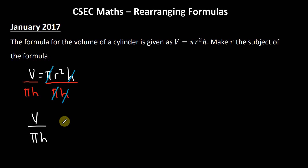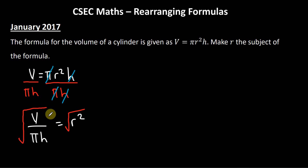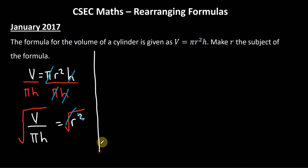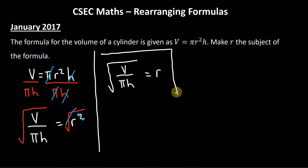We'll be left with V ÷ πh = r². We have not yet reached our goal — they want us to make r the subject, not r². So we need to do the opposite of the square operation, which is the square root. I'll square root both sides. It's key to note that the square root sign must extend over both the numerator and denominator of the fraction. The square root cancels the square, and we're left with √(V/πh) = r.